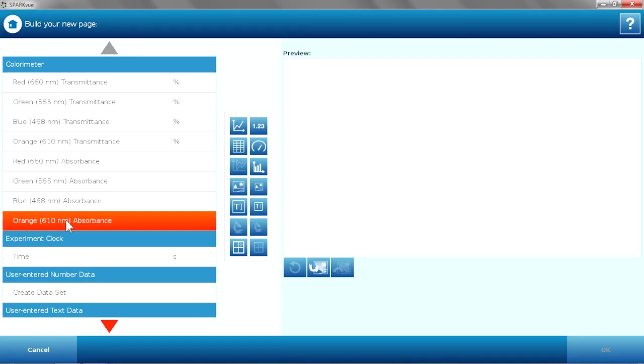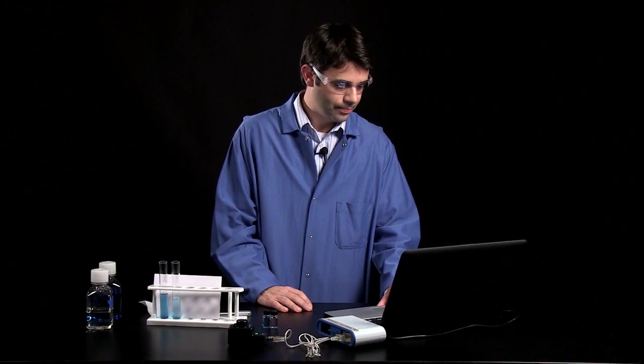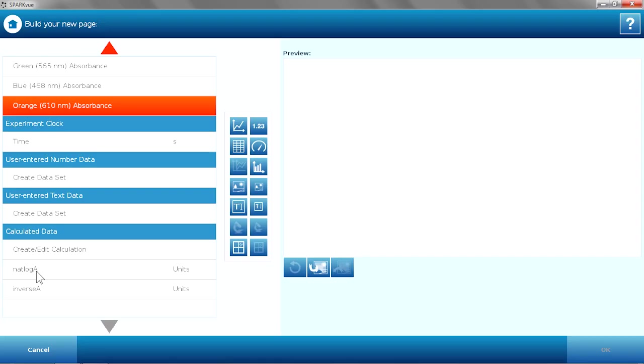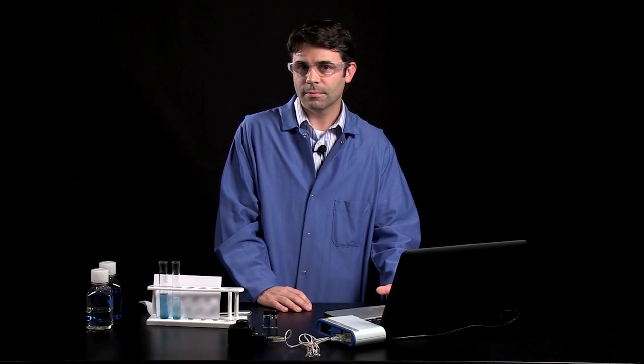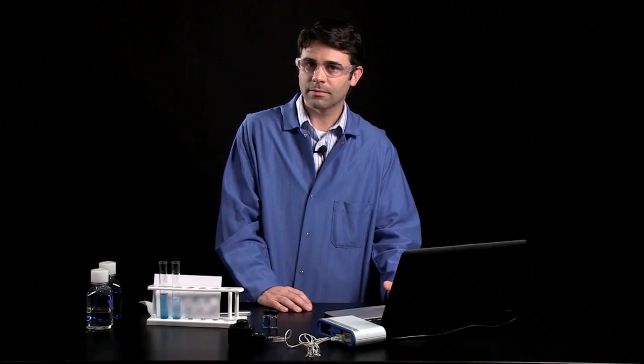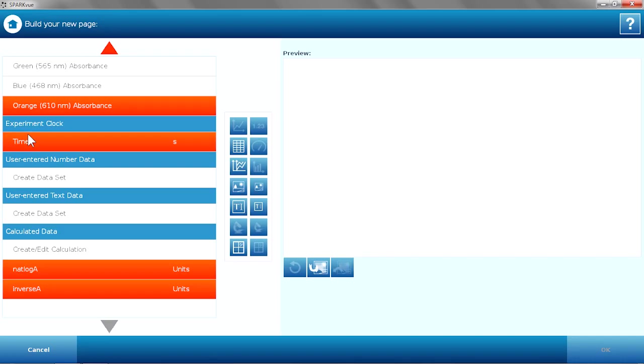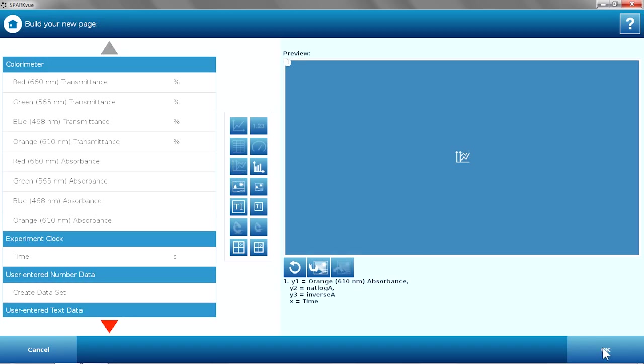Now I'm going to take advantage of the multiple y-axis. I'm going to plot absorbance—if that's straight, it's a zero-order reaction. I'm going to plot natural log of absorbance—if that's straight, it's a first-order reaction. And inverse absorbance—if that's straight, it's a second-order reaction. All of them versus time on a multiple y-axis. I'll hit OK.